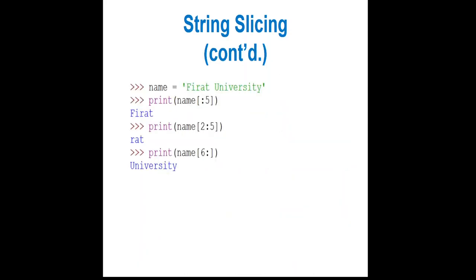For example, with the string 'Fat University', if we slice from the beginning with no specified start up to index 5 (exclusive), we get characters at indexes 0, 1, 2, 3, 4 — that is our output slice. We can also take a different slice from index 2 to 5, giving us characters at positions 2, 3, 4 — for example, 'rat'.